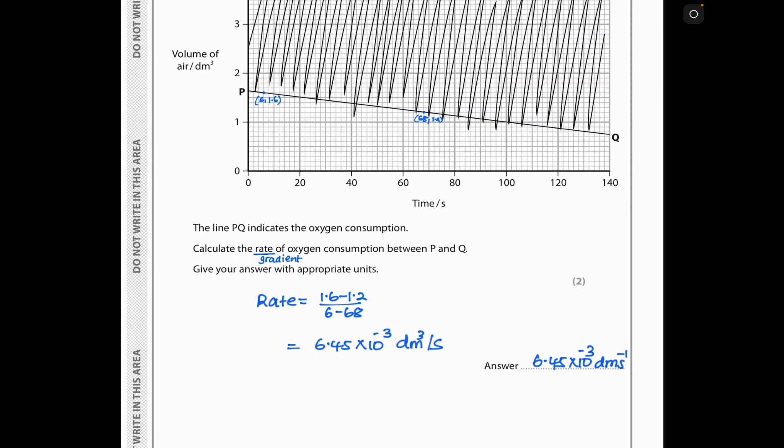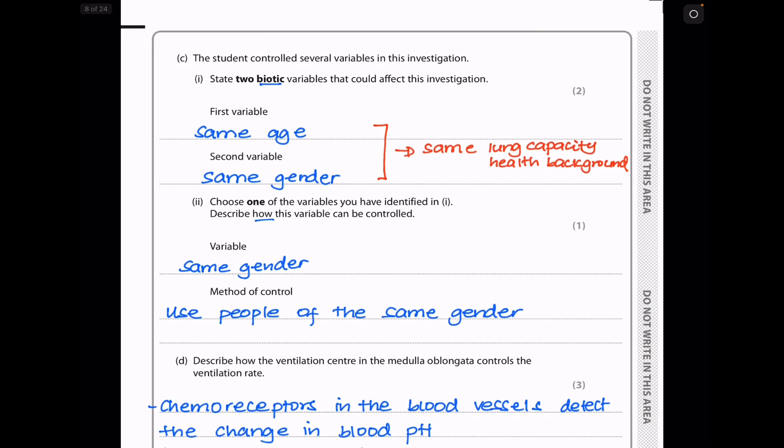So my rate, which is a gradient, is going to be 1.6 minus 1.2 divided by 6 minus 68. And of course, this is going to be a negative value, but of course, you're going to ignore it because it's a decrease. So I said it's 6.45 times 10 power negative 3. Again, this is going to be a negative value. And that should be my answer. But even if you do not include the negative value, either way, it's going to be a negative gradient.